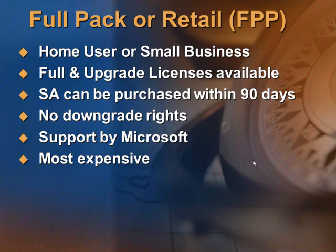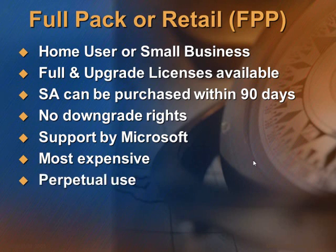Software Assurance is valid for 2 years and it gives you rights to the new edition if that is launched within the 2-year period. Please note that if you have purchased Office 2010 Standard, you cannot install Office 2007 — no downgrade rights are possible. But the Retail Pack does give you the ability to use the same on a different PC once you decide to scrap the original PC, meaning you can use the software forever — perpetual. And you also get support from Microsoft.